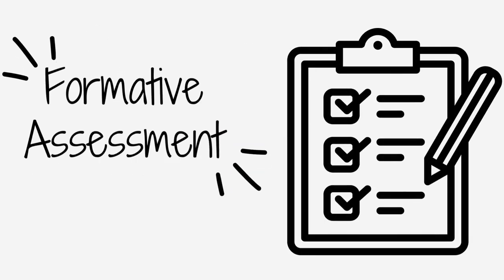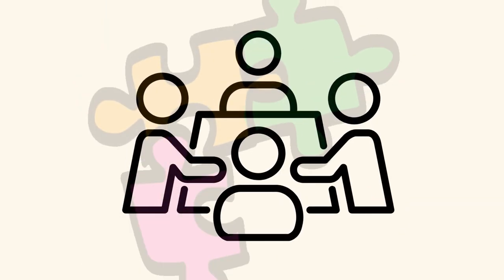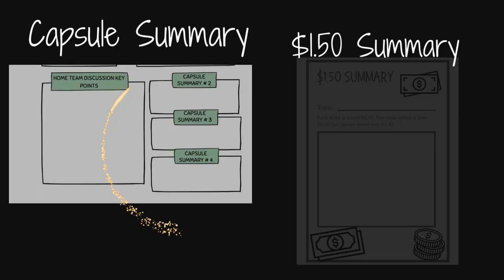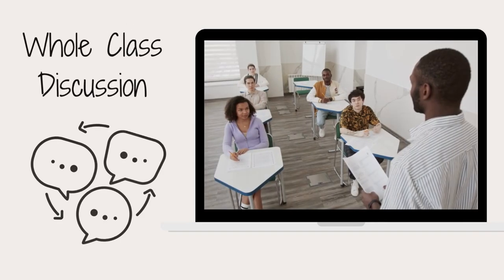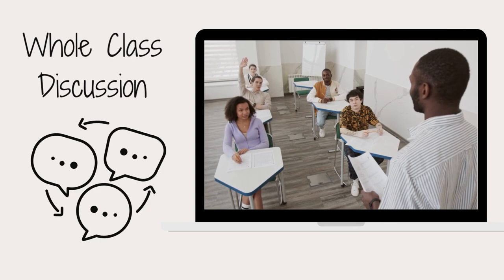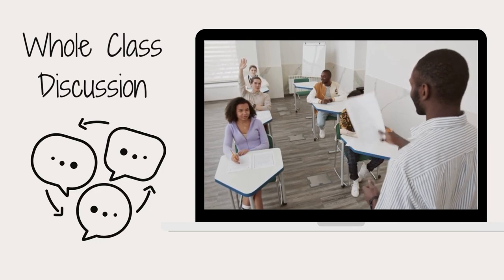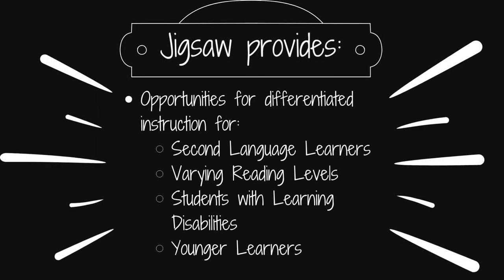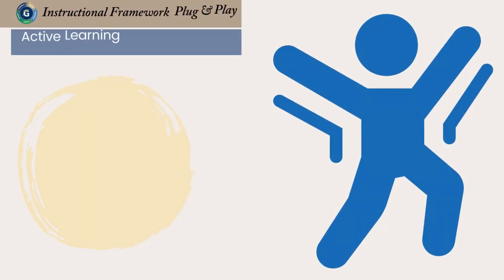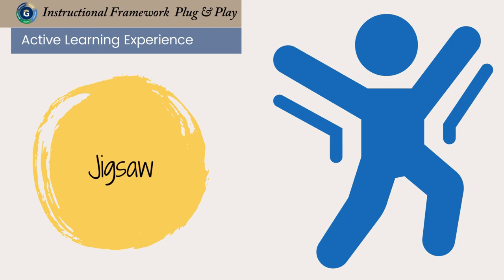This is a perfect time for formative assessment. Once each expert has shared with their home group and the jigsaw puzzle is complete, have students individually write a summary of their learning using a summarization strategy, such as a capsule or a $1.50 summary. Teachers can also have a brief whole-class discussion about the source of the jigsaw to answer any questions or clarify any misconceptions. Jigsaw provides opportunities for differentiated instruction for second language learners, students of varying reading skills, students with learning disabilities, and younger learners. Jigsaw in the Classroom has a four-decade track record of success.